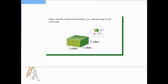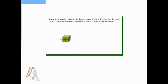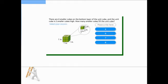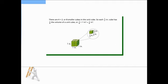Step 2: Find the volume of each smaller 1/2-inch cube by using it to fill a unit cube. There are 4 smaller cubes on the bottom layer of the unit cube, and the unit cube is 2 smaller cubes high. There are 4 times 2, or 8 smaller cubes in the unit cube. So each 1/2-inch cube has 1/8 the volume of a unit cube, or 1/8 times 1 cubic inch equals 1/8 of a cubic inch.